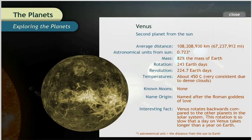Venus is the second planet from the Sun. Its mass is 82% of Earth's mass.